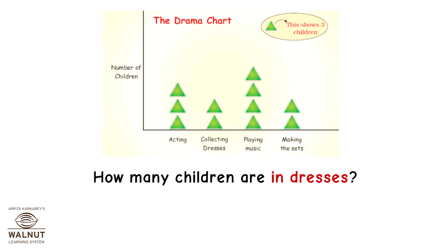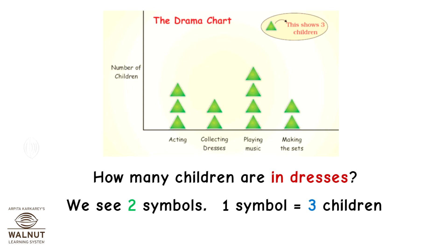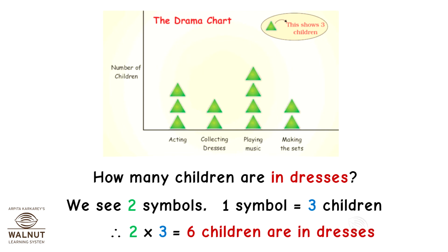How many children are in dresses? We see two symbols; one symbol is equal to three children, so 2 into 3 which is equal to six children are in dresses.